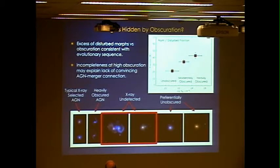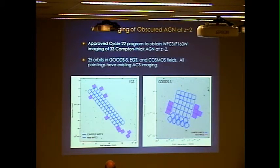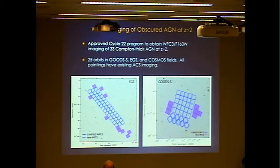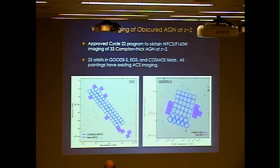This is all done at redshift one because we don't have enough WFC3 coverage for the Compton Thick study at redshift two. We expect the effect would actually be amplified at redshift two based on Phil's simulated luminosity functions. Fortunately, we just got a Cycle 22 program approved to image 33 Compton Thick sources at z~2 to follow up on this, with 25 orbits in GOODS South, EGS, and COSMOS. The pointings will fall on existing ACS imaging, slightly expanding the CANDELS footprint — it's almost the equivalent of an additional CANDELS wide field.